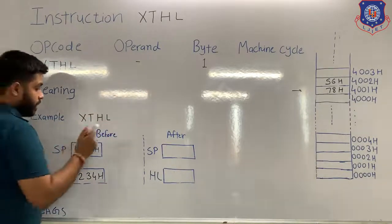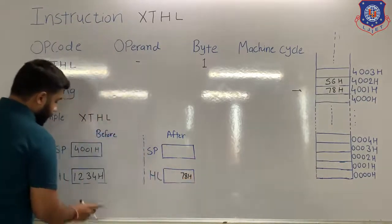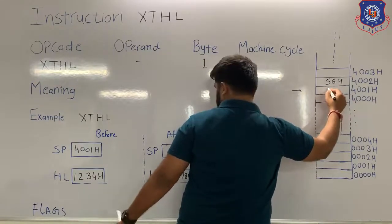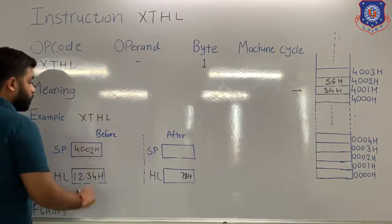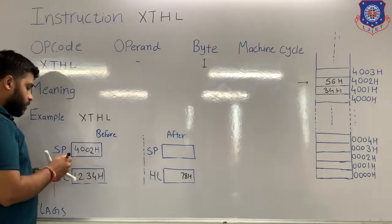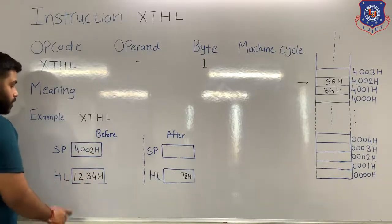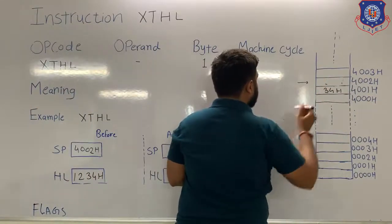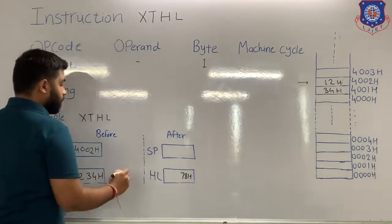So, 78H will be transferred to the lower byte of the HL pair, and 34H will be transferred to the stack where the stack pointer is pointing. After that, the value of the stack pointer will be incremented by 1, so now the stack pointer is pointing at the next location containing 56H. The processor will then exchange data with the higher byte of the HL pair — 12H will be stored in the stack where the stack pointer is pointing, and the data there will be transferred to the higher byte of the HL pair.